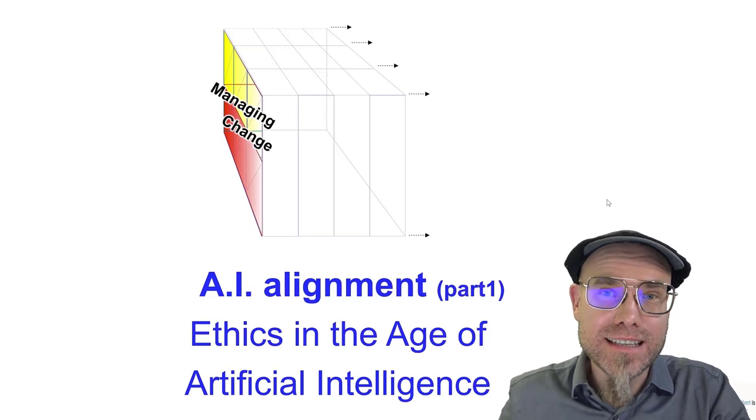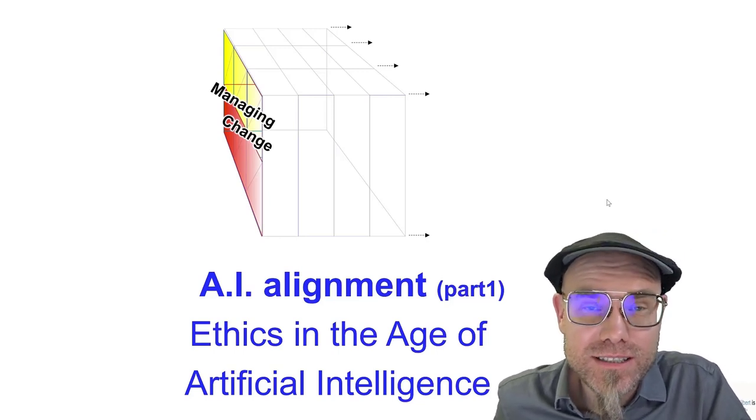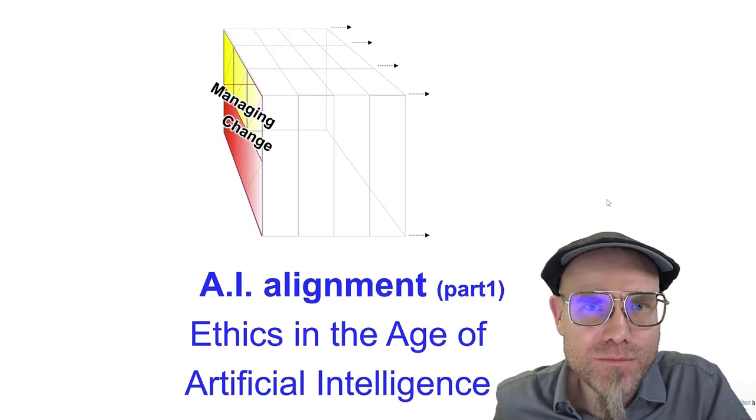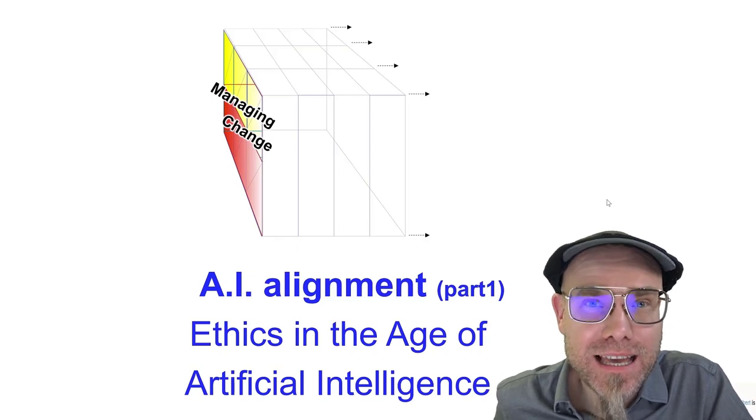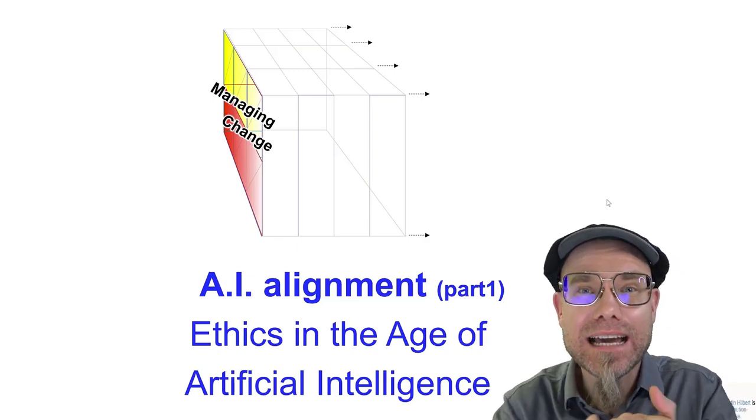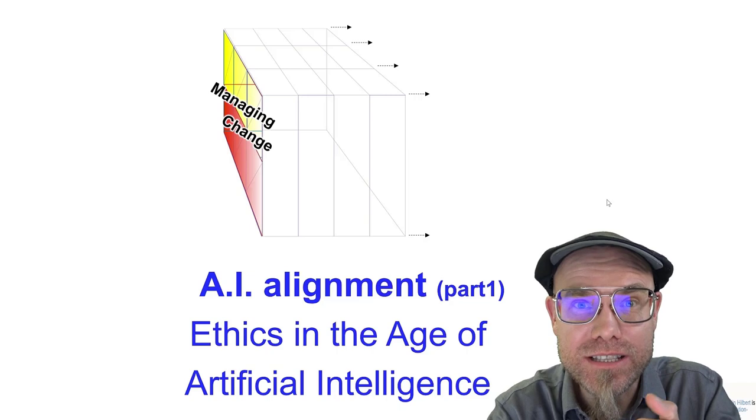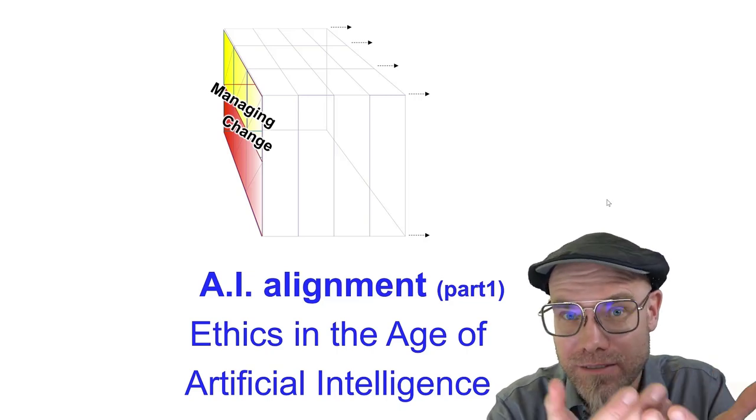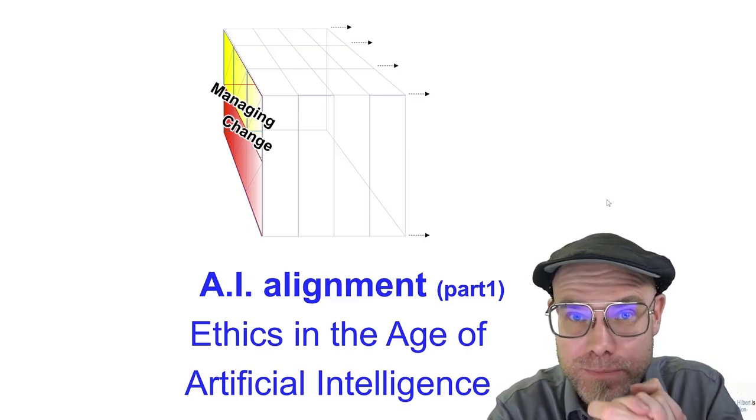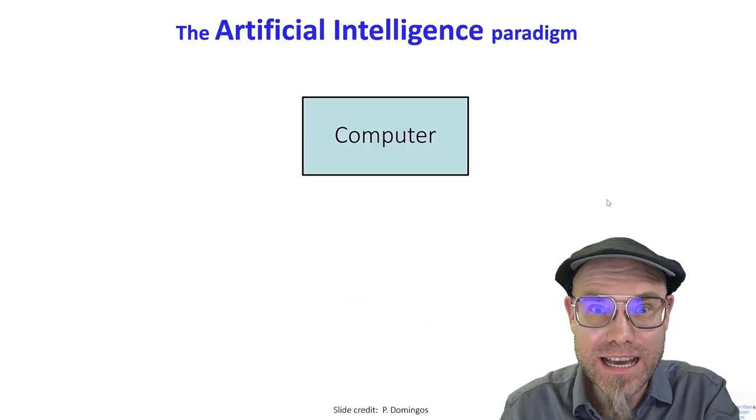The question of ethics in the age of artificial intelligence is currently carried out under the umbrella term AI alignment. How can we align artificial intelligence with our human values and norms? That's what we're going to look at right now.